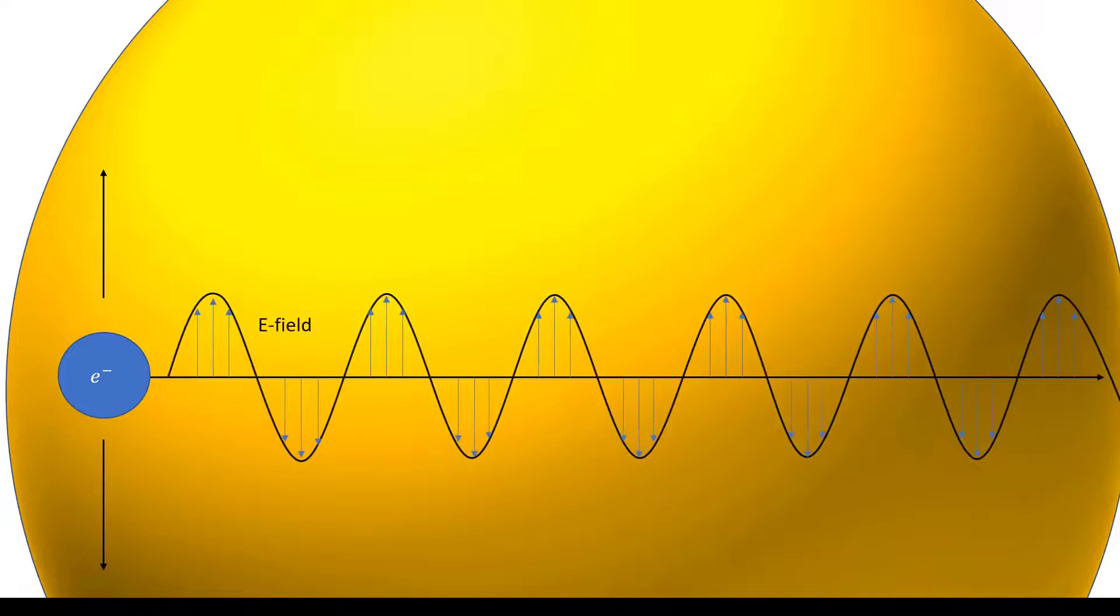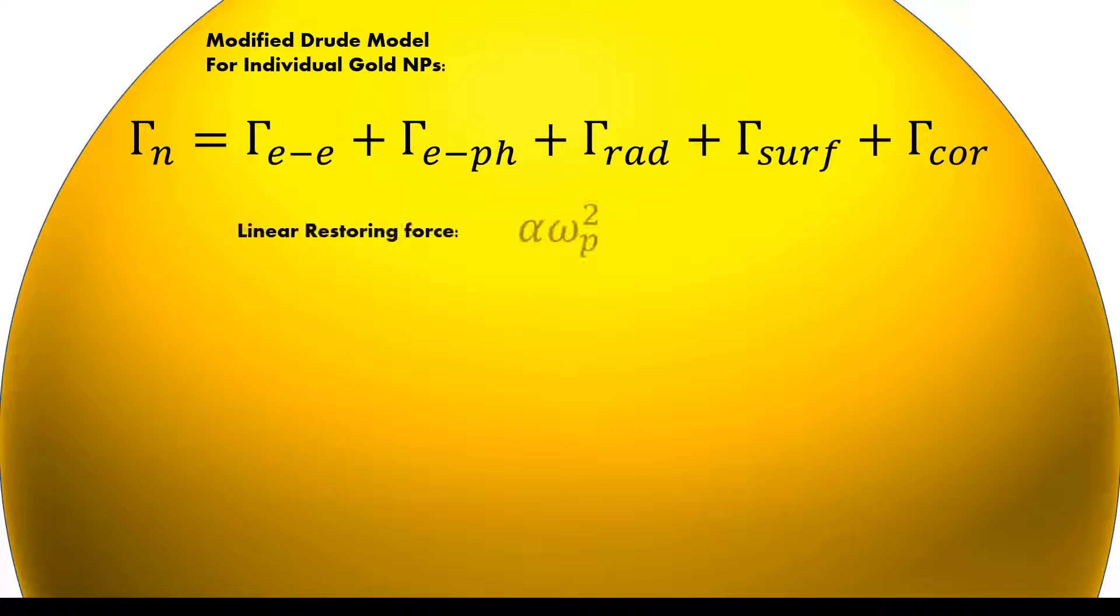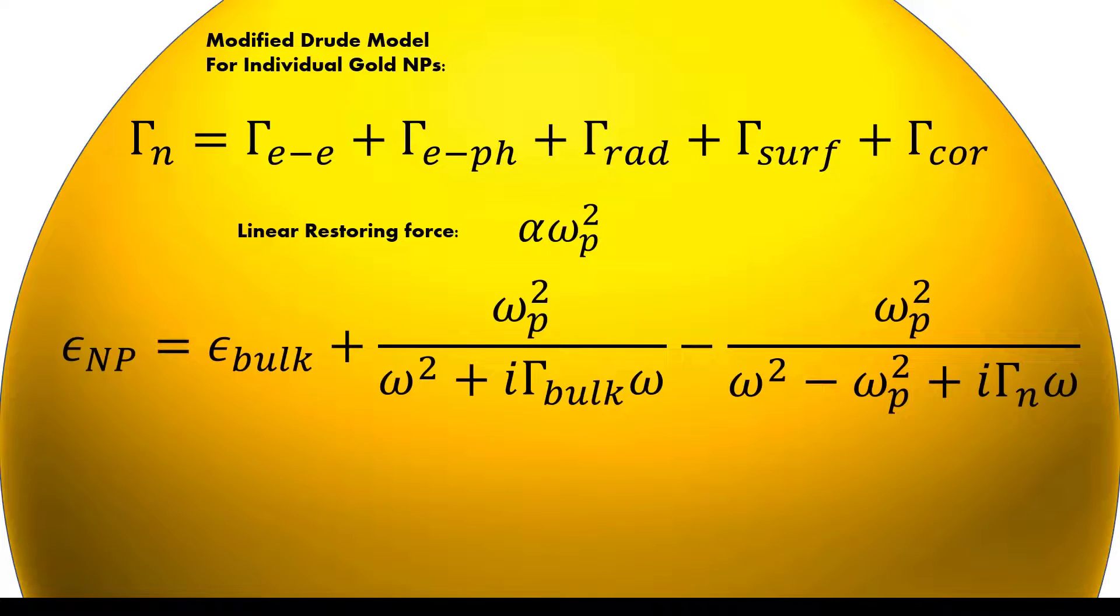We also need to consider radiative scattering from accelerating electrons, and finally, electron collisions with the nanoparticle surface. We also need to consider a linear restoring force at this nanoscale, where now our modified Drude permittivity is given by this equation.